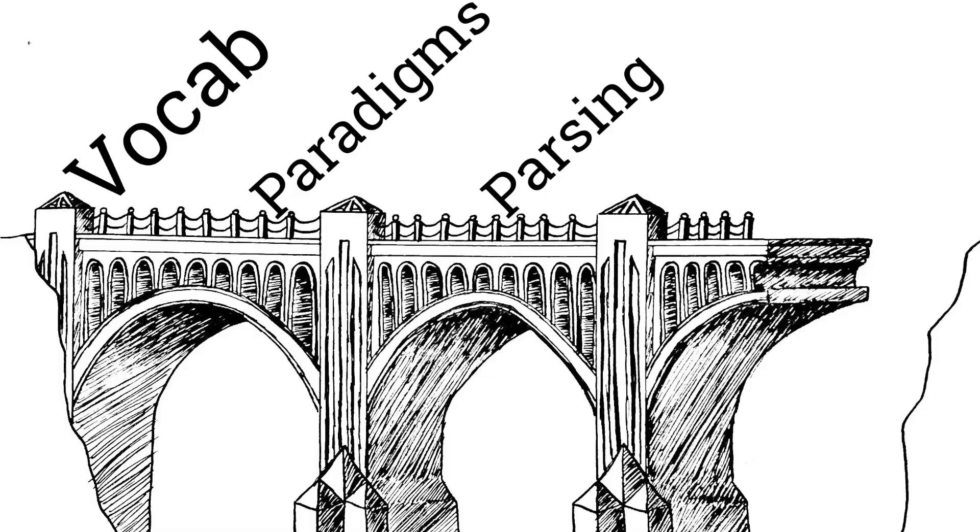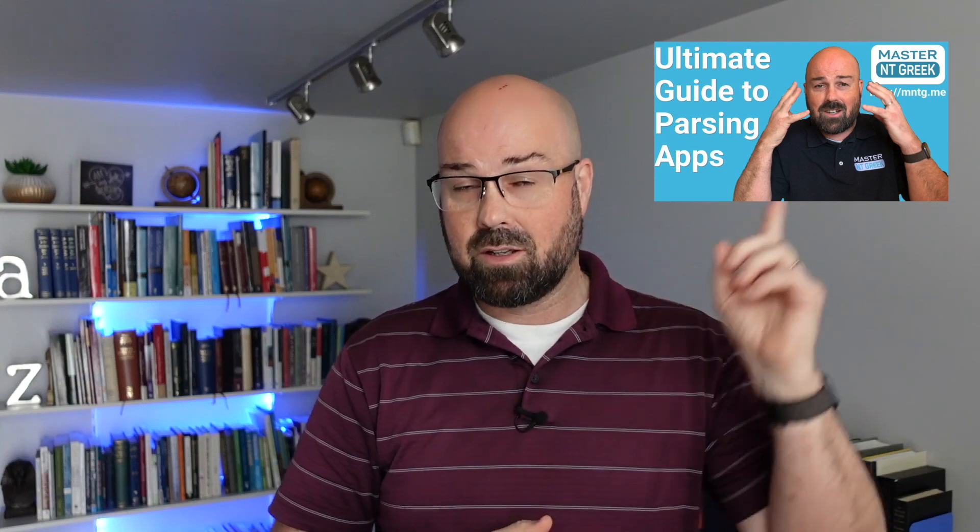The third section of the bridge, after vocabulary and paradigms, is to practice your parsing. The vocabulary is about the words; the paradigms are about the morphology and endings — augments, tense morphemes, and similar elements. You want to take those two concepts and put them together so you're starting to see those morphological changes on the words. The way to do this is using a parsing app. In the old days, professors would give you a parsing exam; today we have parsing apps, which are fantastic tools to practice in your own time.